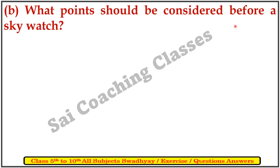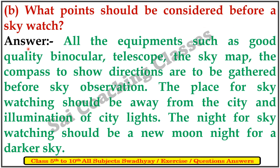What points should be considered before a sky watch? All the equipment such as a good quality binocular, telescope, the sky map, and a compass to show direction are to be gathered before sky observation. The place for sky watching should be away from the city and the illumination of city lights. The night chosen for sky watching should be a new moon night for a darker sky.